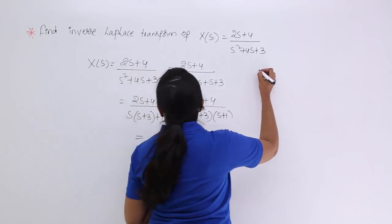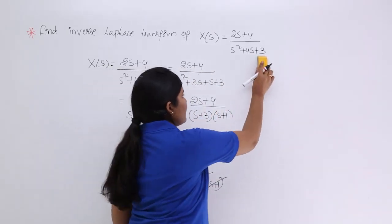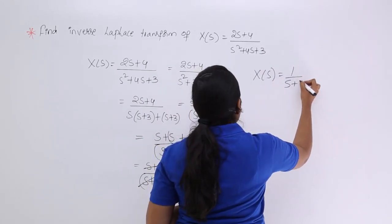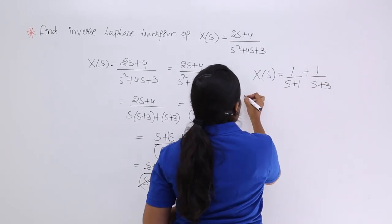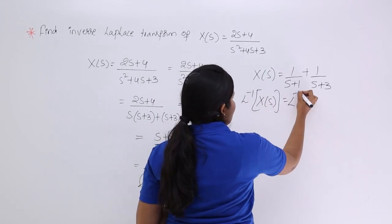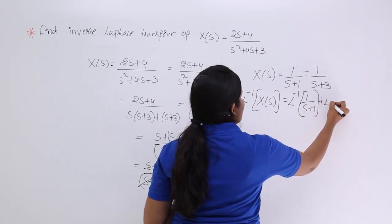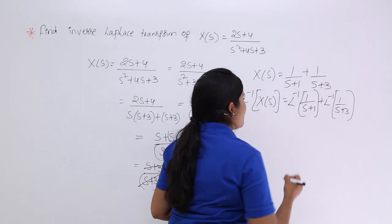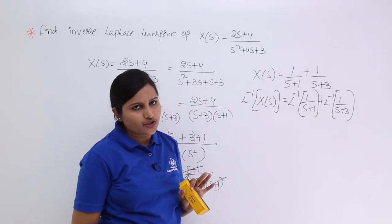So X(s) is now equivalent to 1/(s + 1) + 1/(s + 3). Applying the inverse Laplace transform gives the inverse of 1/(s + 1) plus the inverse of 1/(s + 3). This is now in the proper standard form to apply the inverse Laplace transform directly.